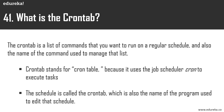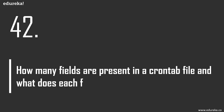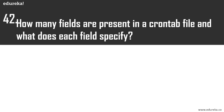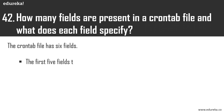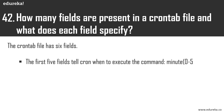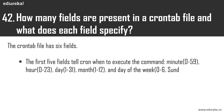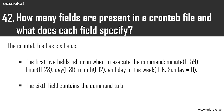The schedule is called the cron tab — short for cron table — because it uses the job scheduler cron to execute tasks. This is also the name of the program used to edit that schedule. This software utility is a time-based job scheduler. What does each field do in a cron tab file? The cron tab file has six fields — the first five specify when to execute (minute, hour, day, month, day of week) and the sixth specifies the command.